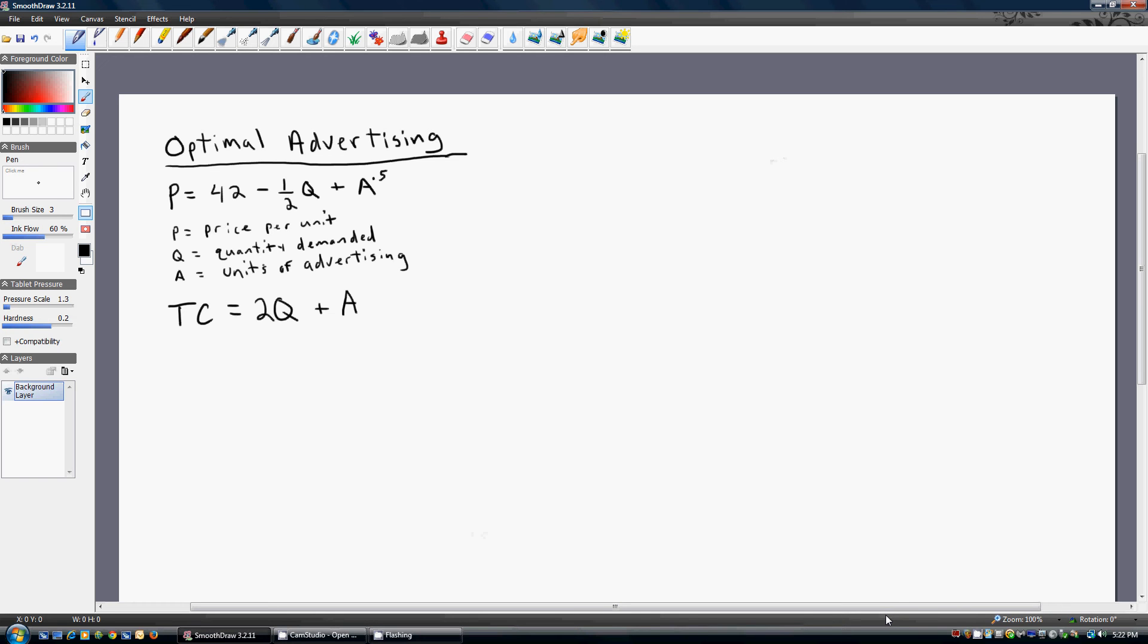This video will show you how to solve for the optimal advertising level for a firm. This firm has an inverse demand equation equal to 42 minus 1 half Q, where Q is quantity demanded.